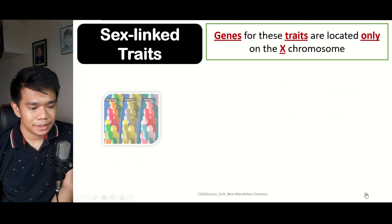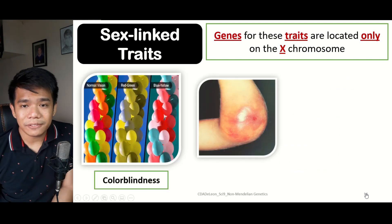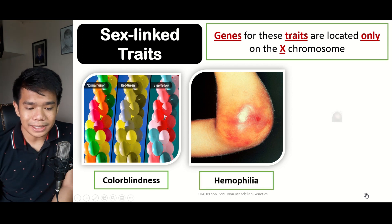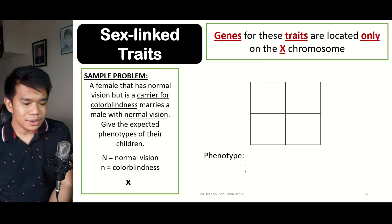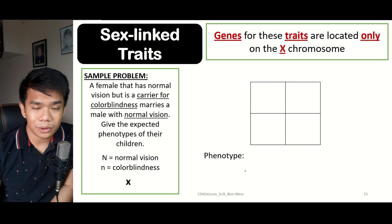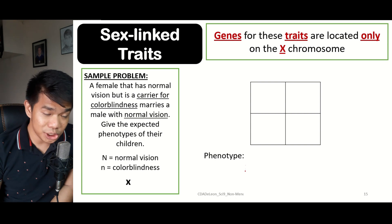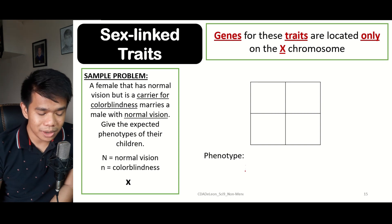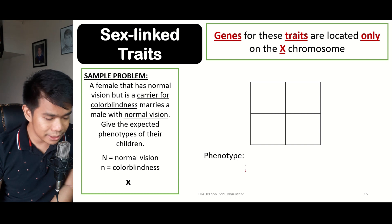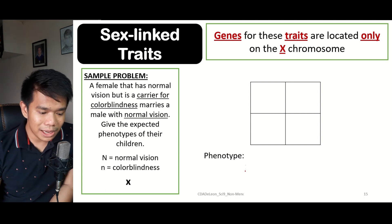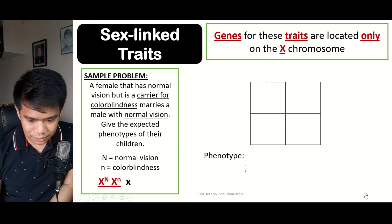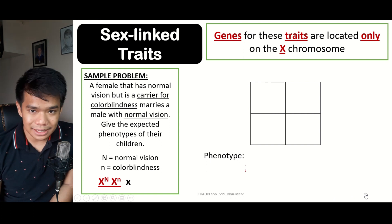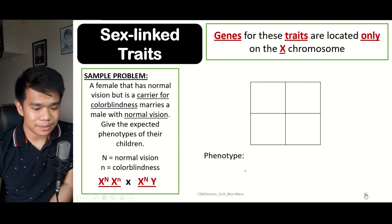Sex-linked traits include genetic disorders such as color blindness, hemophilia — where blood does not clot — and pattern baldness in males. For example: a female with normal vision who is a carrier for color blindness marries a male with normal vision. Normal vision is symbolized by capital N, and color blindness by small n. The female is represented as X-capital-N X-small-n, and the male as X-capital-N Y.